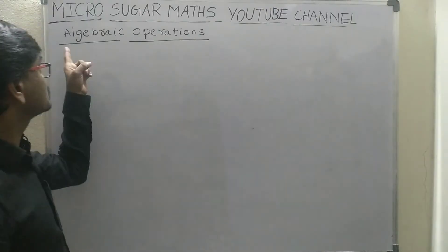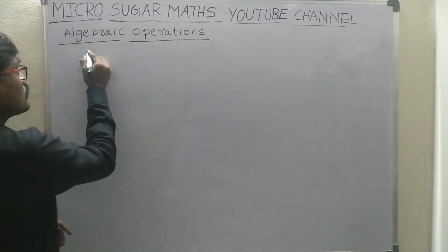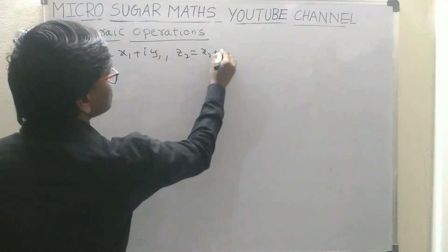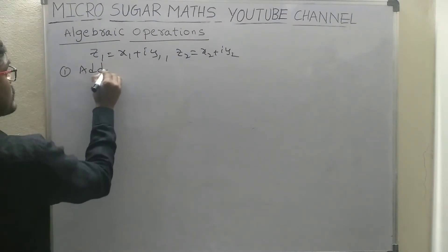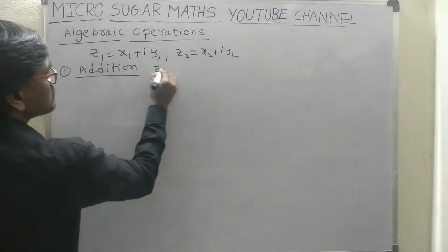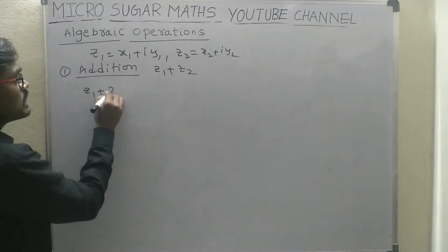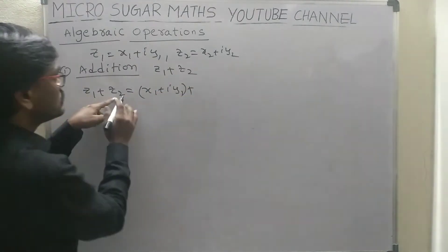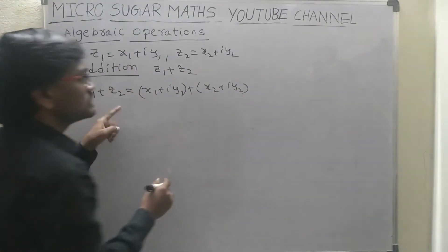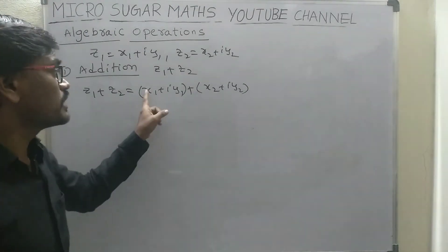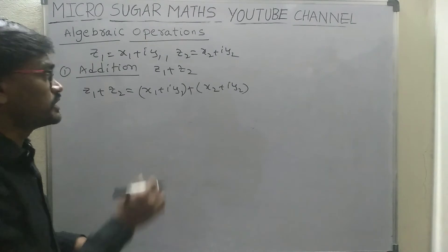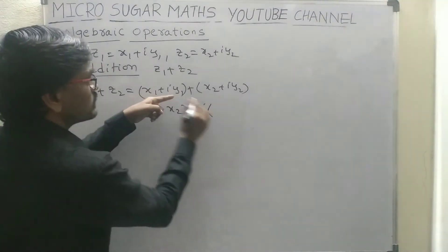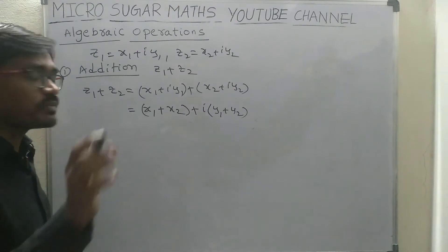Next, algebraic operations on complex numbers. Let us take two complex numbers: Z1 is equal to X1 plus iY1, and Z2 is equal to X2 plus iY2. First one is addition. Addition of two complex numbers is denoted by Z1 plus Z2 and is given by: write down Z1 value X1 plus iY1, next write down Z2 value X2 plus iY2. We should add only real parts and imaginary parts respectively, that is X1 plus X2 plus i(Y1 plus Y2).